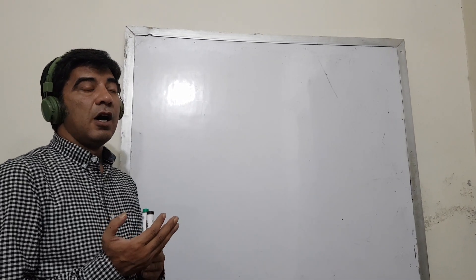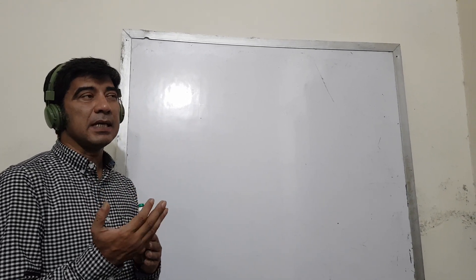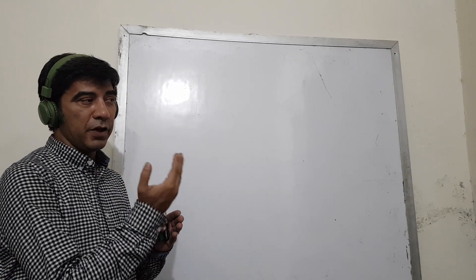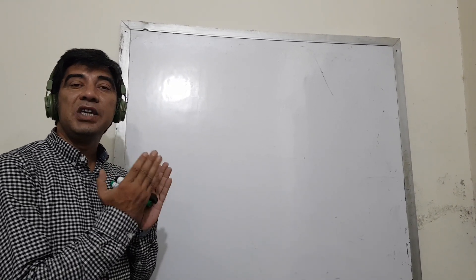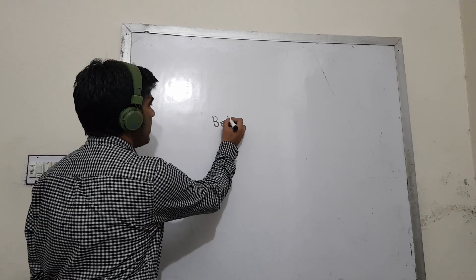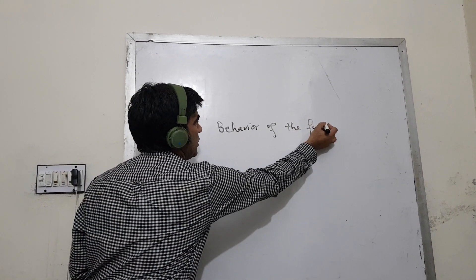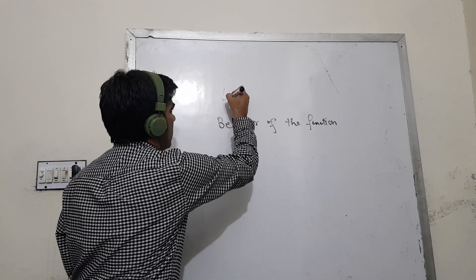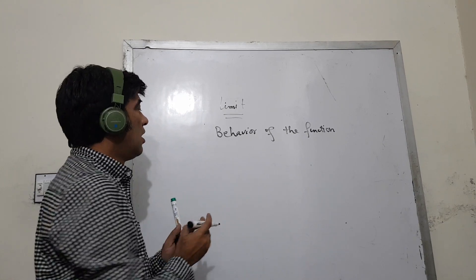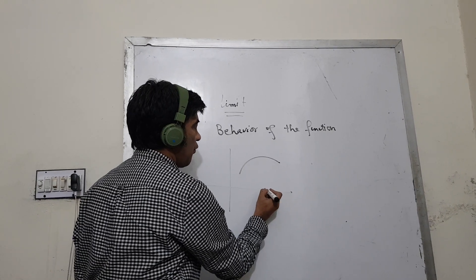You must understand why we find the limit and what is the role of the limit. Basically, when you take any function and you want to see the behavior of the function, you use the limit. The limit is used to see the behavior of the function by nearby values of any domain.